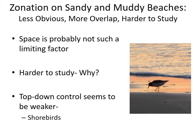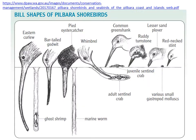That's not to say there isn't strong predation on sandy and muddy shores. One common type of predator is shorebirds — many species of sea or shorebirds adapted to feeding in these environments. This picture shows some examples of shorebirds from Australia, where the great variety of beak shapes allows them to feed on different infaunal and epifaunal organisms on the sandy and muddy shores.